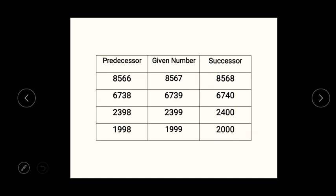Let's start with predecessor and successor. What is the predecessor for a given number? If the given number is 8,567, for the predecessor we have to subtract 1 from the given number, and for the successor of a given number we have to add 1 to the given number.